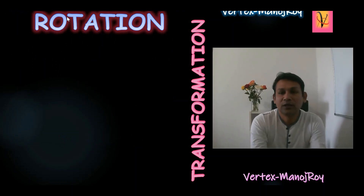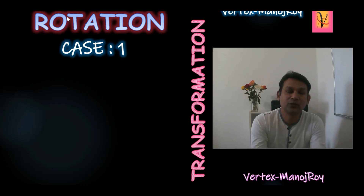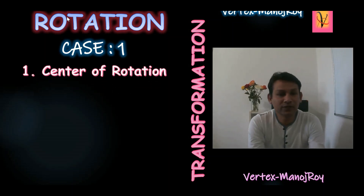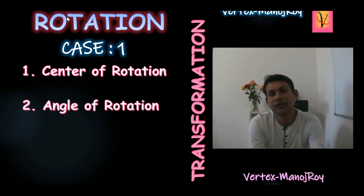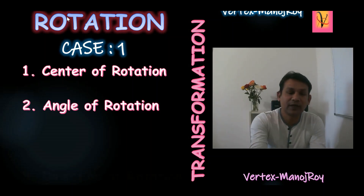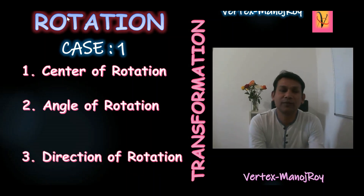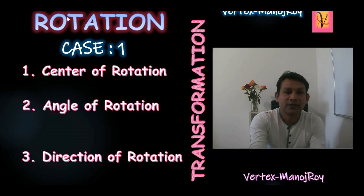For Case 1, the important things we need for the formation of a given object to get the image are: first, the center of rotation — without it, it is not possible to rotate an object. Second is the angle of rotation, and third is the direction of rotation. All three will be given in the exam, and without these three things we cannot rotate the object to get the image.